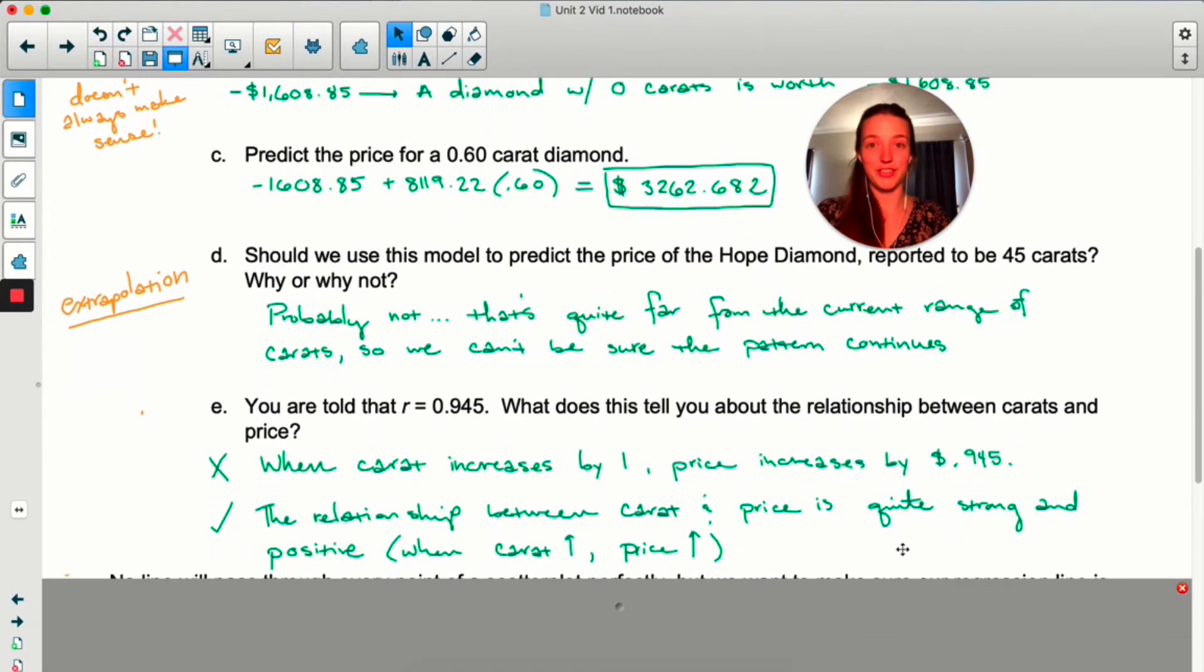Now for this last one, I wrote the wrong answer first. A really common mistake is to take R and interpret it as a slope. So this first one is a very common wrong answer. When the carat value increases by one, the price increases by 0.945 dollars. I don't know what it is about R. I guess it's the fact that if R is positive, the slope is going to be positive. There's something about it that students get it mixed up all the time. So the correct information we can gather from R is that the relationship between the carat and price is quite strong. This is really close to one. And it's positive, which means when the carat value increases, the price also increases.